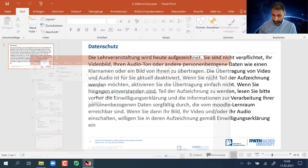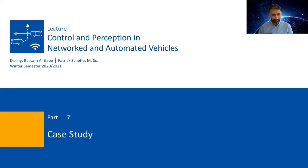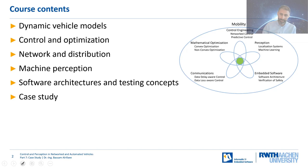Now I would like to continue with part number seven — the case study. After five parts of the lecture, we are already in the case study. We learned about vehicle dynamics, control and optimization, network and distribution, machine perception, and software architectures and testing concepts. The main focus in the case studies is going to be on modeling and some coding — just to get your fingers warm for coding in the lab and to discuss the applications and their modeling.